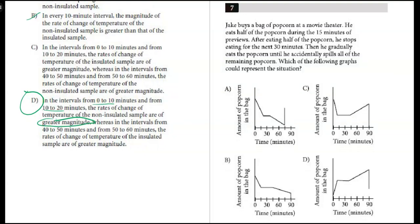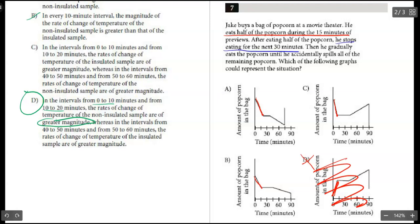All right, moving on down to number seven. Jake buys a bag of popcorn at the movie theater. He eats half the popcorn during the first 15 minutes. After eating half the popcorn, he stops for the next 30, then he gradually eats the popcorn until he spills the remaining. Which of the following represents the situation? So we're looking for a few key things here. He eats half the popcorn during the first 15 minutes. Situation A, that could kind of happen because it looks like he eats quite a bit right in the first 15 minutes. This one eats quite a bit in the first 15 minutes. This one, somehow the amount of popcorn is getting bigger, so that one's out right out of the gate. Part B looks like he eats about half his popcorn, so we still have A, B, and C all kind of alive here.